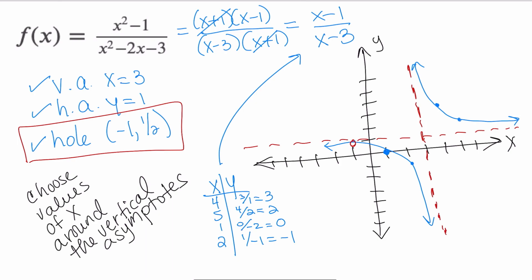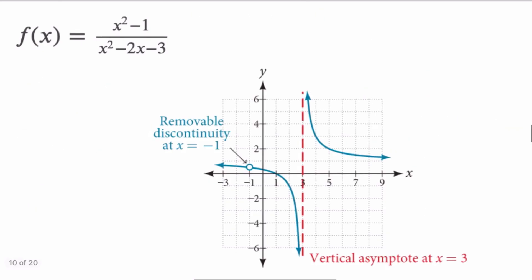So right here, I want to make sure that in my graph, I can tell that there is a removable point of discontinuity. My graph is continuous, but there is a hole in the graph. This is a much better and more accurate picture of what your graph looks like.